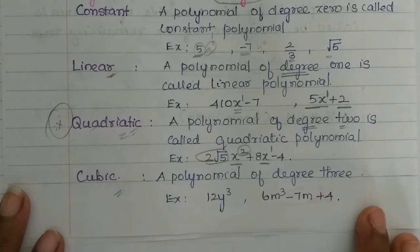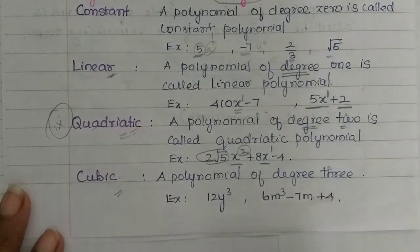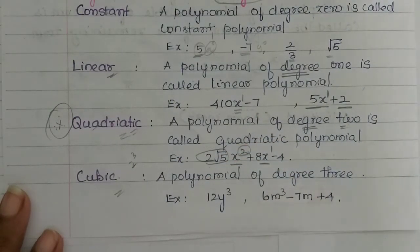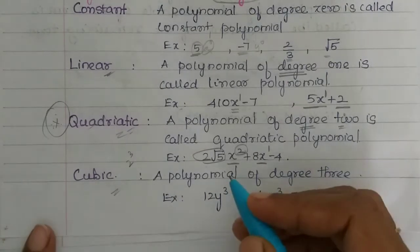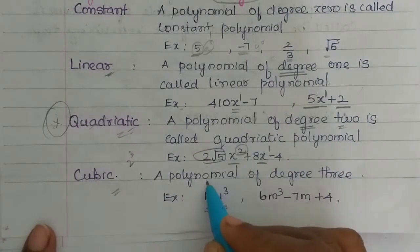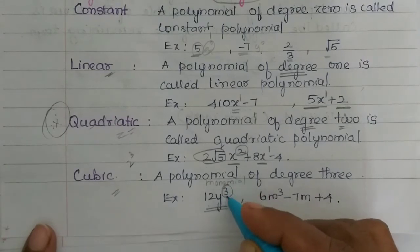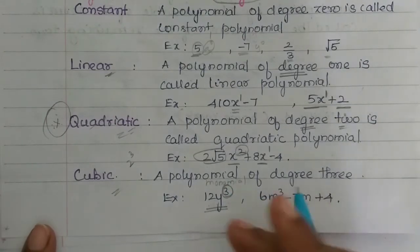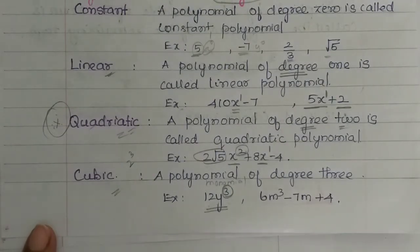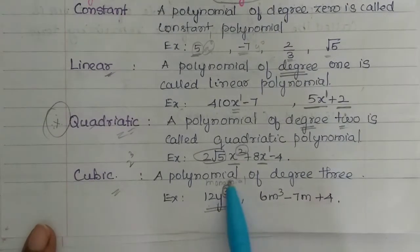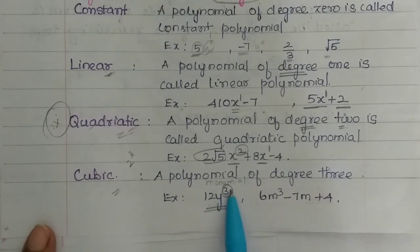That is cubic. Cubic means power 3 — like x³, y³, 2³, 3³. So if the highest power is degree 3, that is a cubic polynomial. For example, 12y³ is a monomial — it is one term. But look at the power: there is a 3. So it is a cubic polynomial. If the highest power is 3, it is a cubic polynomial.